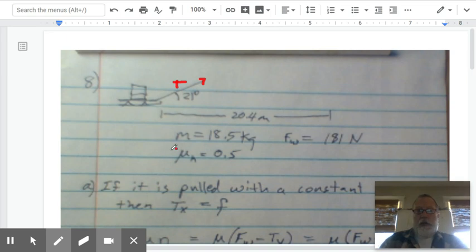And so we are looking for the tension in the rope. What we know is the mass of the sled is 18.5 kilograms. And so to find the weight of the sled and bricks, I just took 18.5 times 9.8 to give us the 181 newtons. The coefficient of kinetic friction is 0.5.